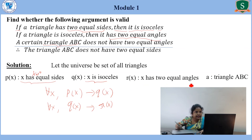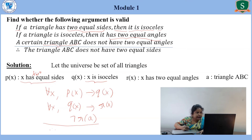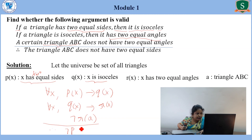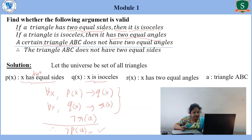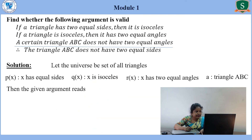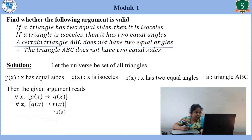We need to prove that the triangle ABC does not have two equal sides, which is the negation of P(A). The quantified argument is written as: for all X, P(X) → Q(X); for all X, Q(X) → R(X); negation of R(A); therefore, negation of P(A). By the rule of syllogism, P(X) → Q(X) and Q(X) → R(X) gives P(X) → R(X) for all X. Then replacing X by A, we get P(A) → R(A).